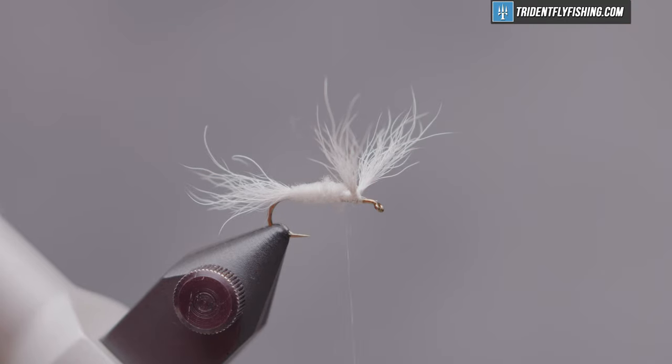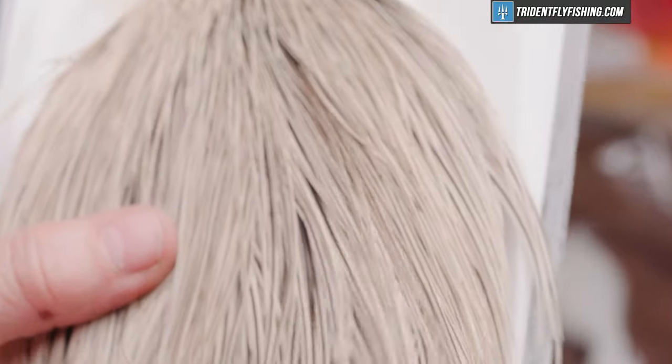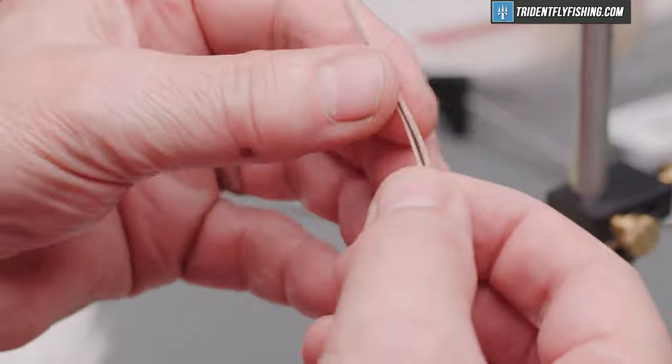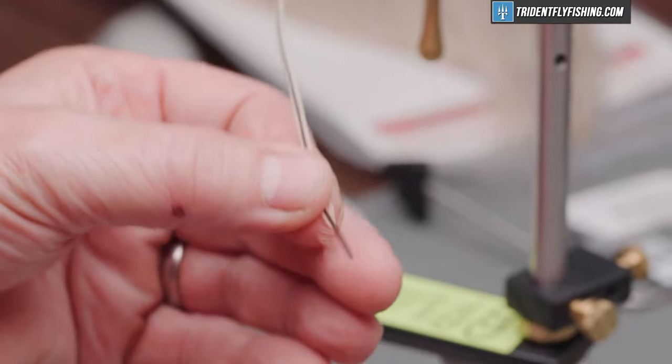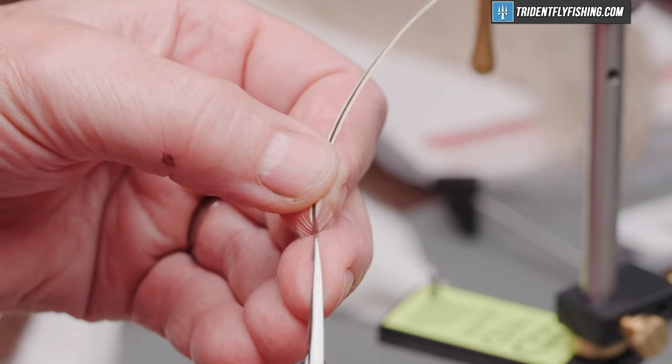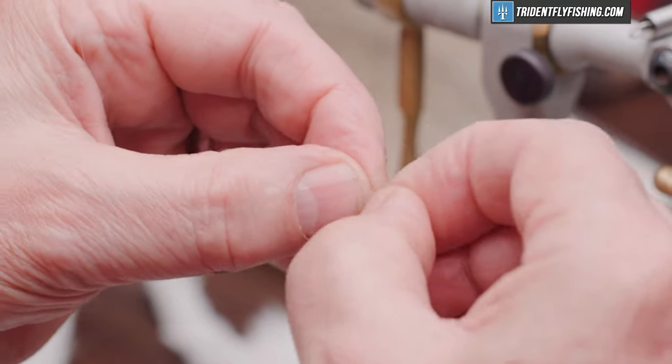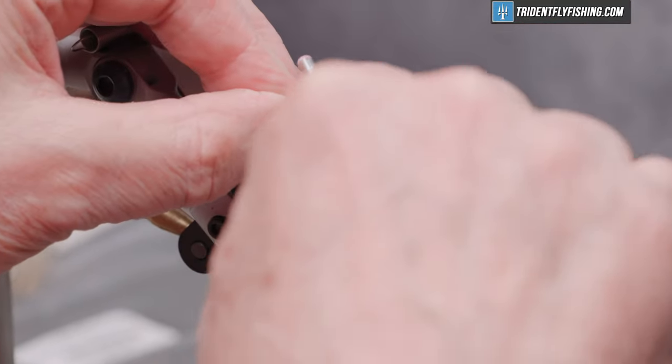And the hackle for this fly is a whiting dry fly cape. And this happens to be a silver badger. And I've got a feather already picked out. We'll prepare that by removing some of the barbs either side of the stem. Leaving a little bit of stubble there for our thread to grab. And we'll tie that in behind the wing.